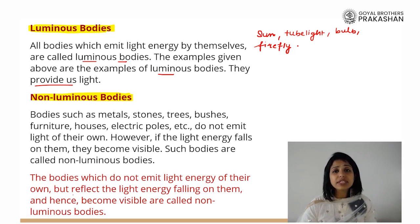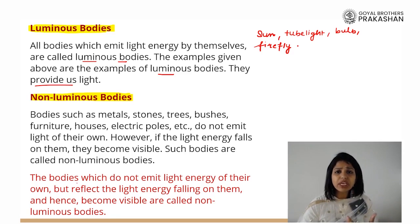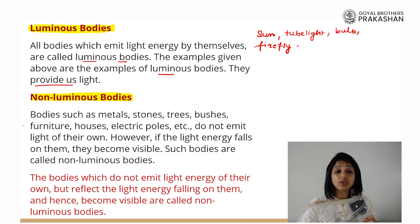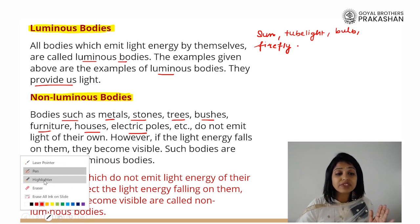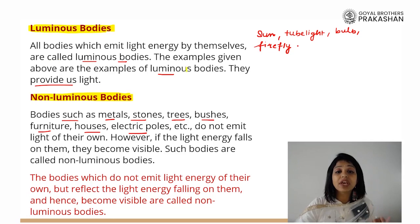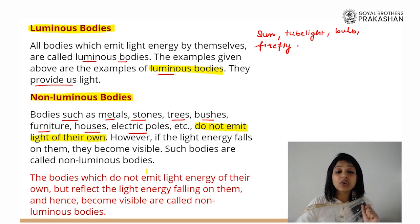But what about the other things around us which we are able to see? Does that mean they are also emitting light? Think of a table, a chair — we are not emitting light. Hence, what are we? We are non-luminous bodies. Bodies such as metals, stones, trees, bushes, furniture, houses, and electric poles — we do not have our own light. The bodies which do not emit light of their own are non-luminous bodies.